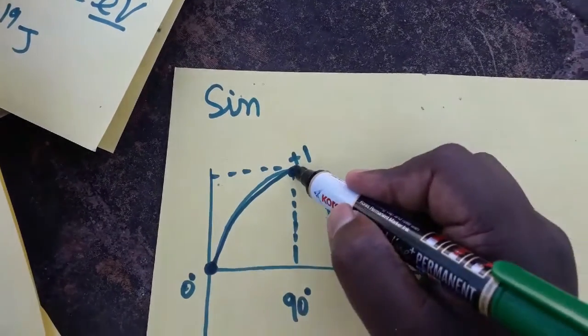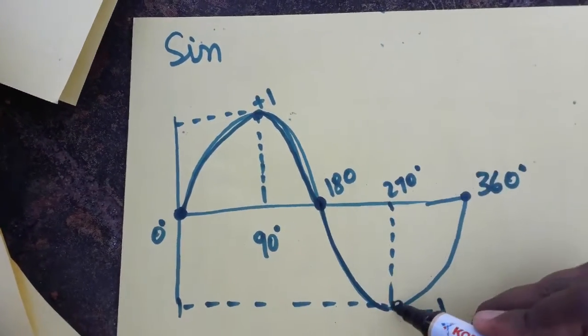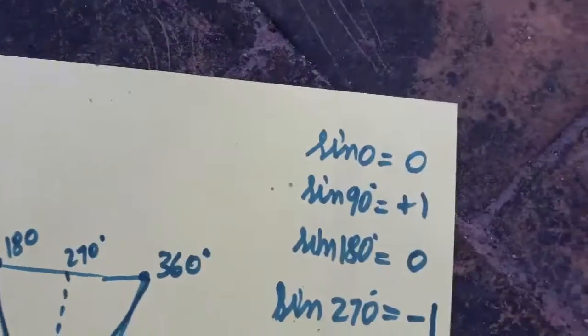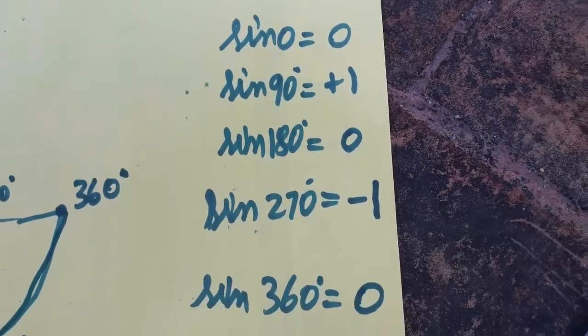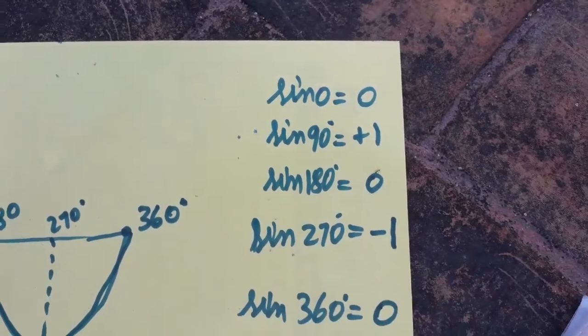Sin 0 is 0, sin 90 is plus 1, sin 180 is 0, sin 270 is minus 1, sin 360 again 0. So without memorizing you can take all the trigonometry values of sin. Thank you.